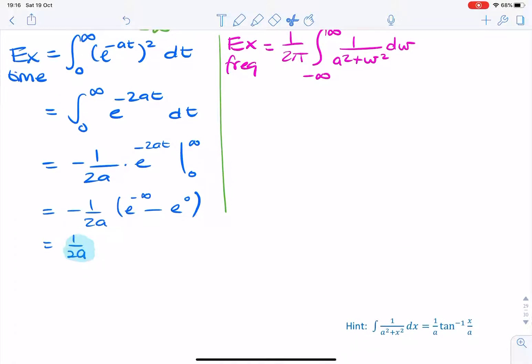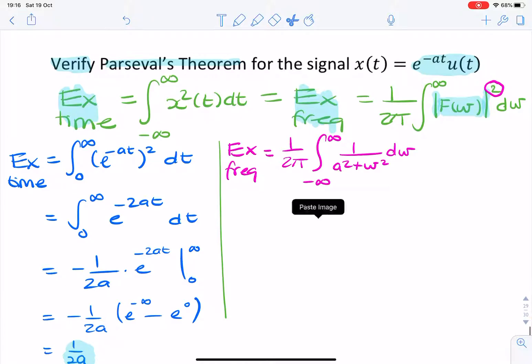If only I could pick it up. So we can use that hint and carry on with the integration. So we have 1 over 2 pi.